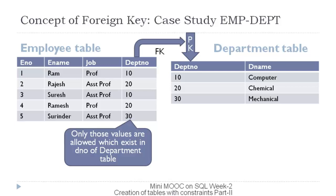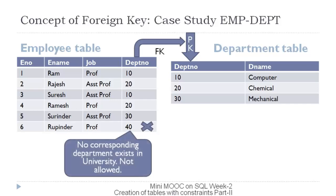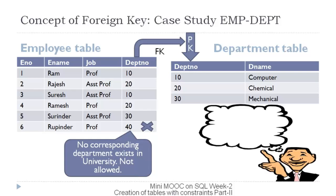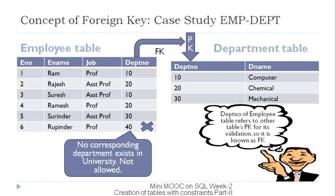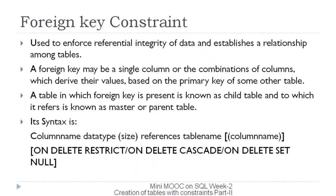Only those values are allowed in the department number column of the employee table that exist in the department table — only 10, 20, and 30 are allowed. If we try to insert a new employee number 6 and assign it to department number 40, it will not be allowed because the corresponding department number is not present in the master department table. The department number of the employee table refers to the primary key of the department table for its validation.